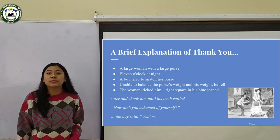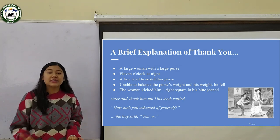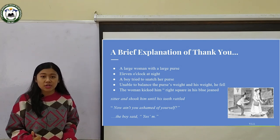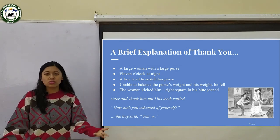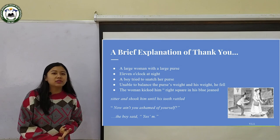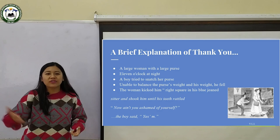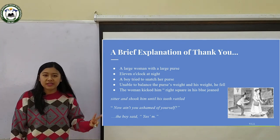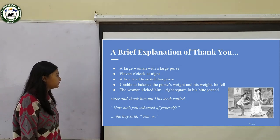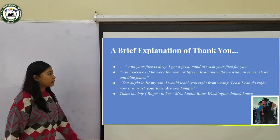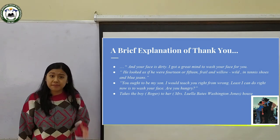The boy is caught and guilty for his actions. Now, what are the two probable consequences? The woman would either take the boy to the police station, or call people around her and have him beaten. These are the two probable things she could do. But then let's see what the woman actually does next.